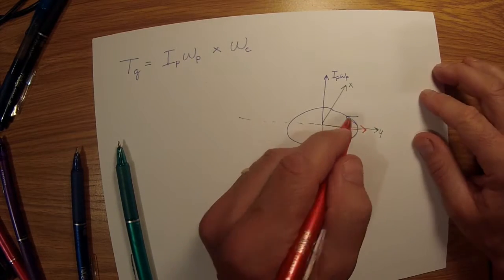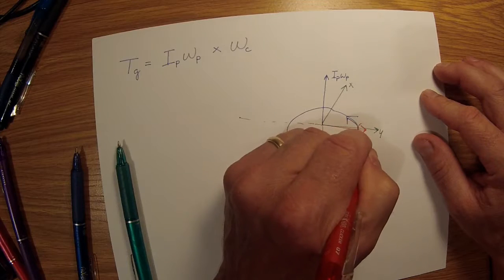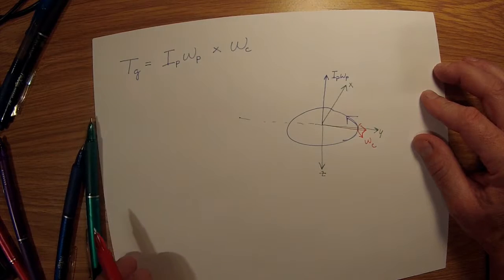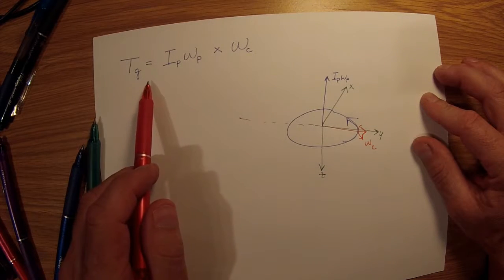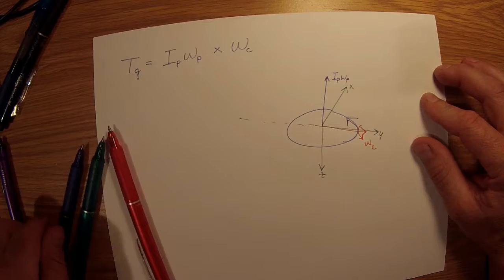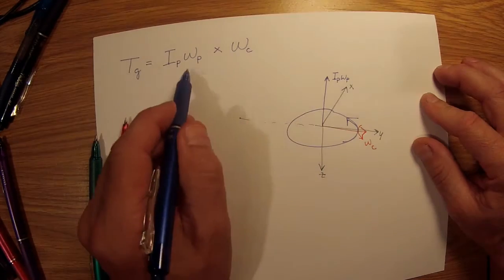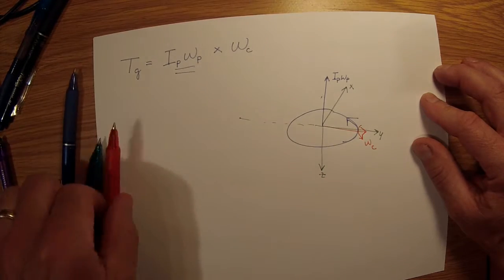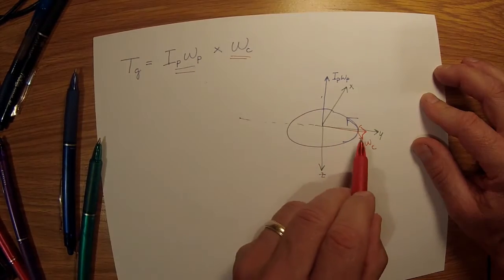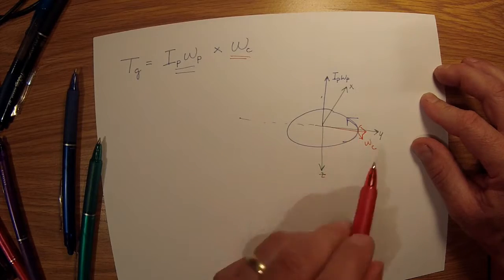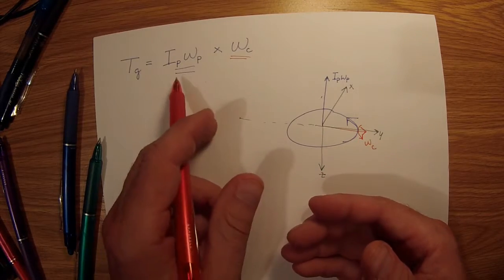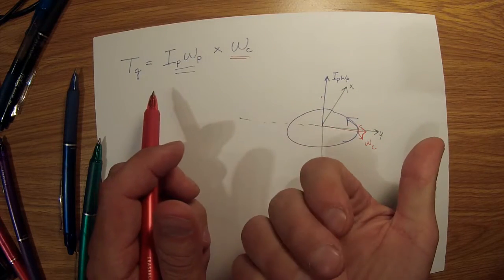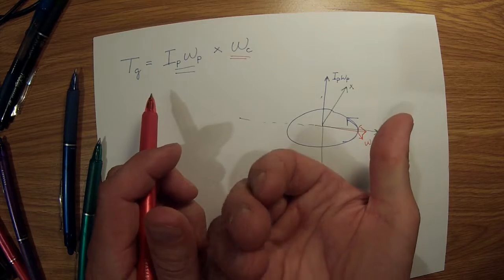Now if we look at this equation here, this term is this vector, and this Omega C is this vector here, this red vector. If we take the vector cross product, again by the right-hand rule, we're going to go from the angular momentum vector to Omega C vector.